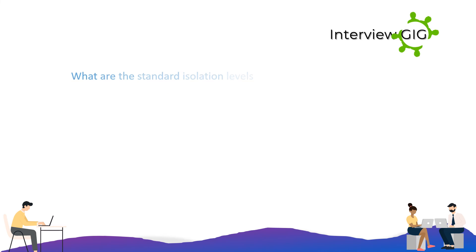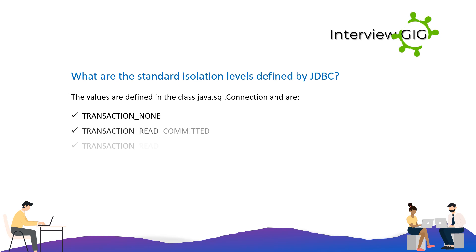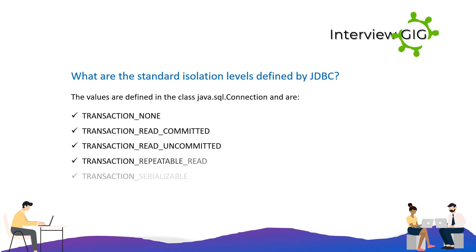What are the standard isolation levels defined by JDBC? The values are defined in the class java.sql.Connection and are: TRANSACTION_NONE, TRANSACTION_READ_COMMITTED, TRANSACTION_READ_UNCOMMITTED, TRANSACTION_REPEATABLE_READ, and TRANSACTION_SERIALIZABLE.